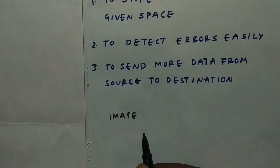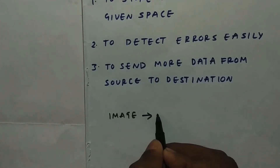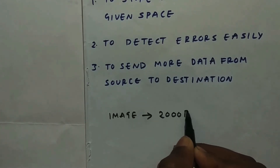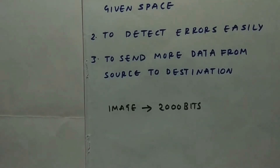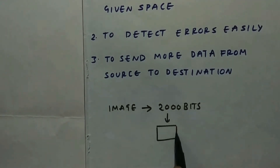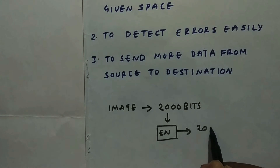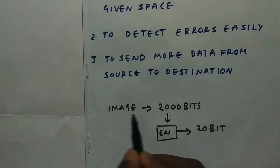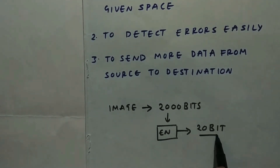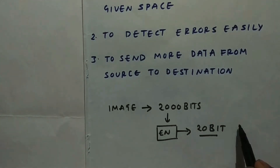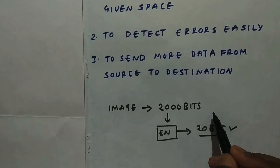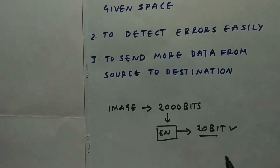Suppose we have an image that is converted into bits — it has around 2000 bits for storage in memory. But this 2000 bits is encoded, and now we get just 20 bits for those 2000 bits. That means an image is encoded into 20 bits, and it is far better to store 20 bits rather than 2000 bits.